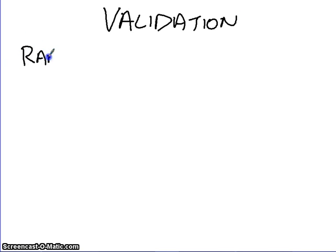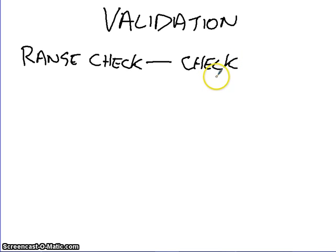Now there are different types of validation. There is a range check. Now exam technique number one. If you think about the words, then you should be able to know what they mean. So a range, if we think about maths, is a range of values. So a range check will check within a range of values. So if we use the student example, you have to be between the ages of 11 and 16 to go to school. That means that any value that I enter between these two values will be valid. That is a range check. We are checking between the ranges, between the values.